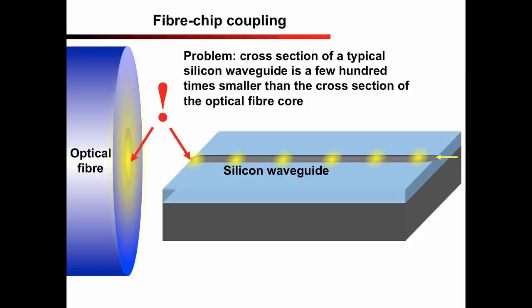In practice, this means that if we just directly attach the fiber to the silicon waveguide, less than 1% of light would get coupled into the waveguide and the remaining over 99% would get lost to the surrounding environment. With such low coupling efficiency, silicon waveguides would indeed be of little practical use.